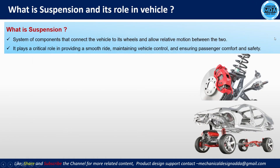Suspension is a complete system of different components. This complete system connects the vehicle frame to the wheel. The suspension system is connected with the frame, axle, and the wheel. We use the suspension system at the front side and at the rear side as well, on both ends.